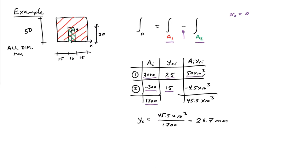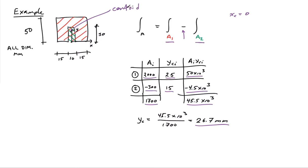The products are 50,000 and minus 4,500. Adding those together gives 45,500 millimeters cubed. Dividing 45,500 millimeters cubed by 1,700 millimeters squared gives the final result of 26.7 millimeters. This is a point sitting just below the top of the cutout, giving me the centroidal location for this problem.